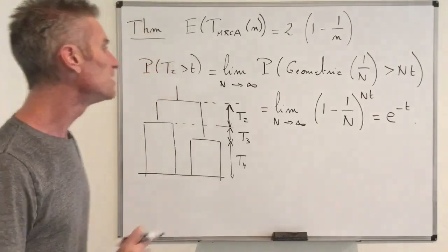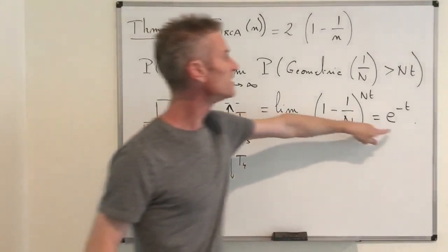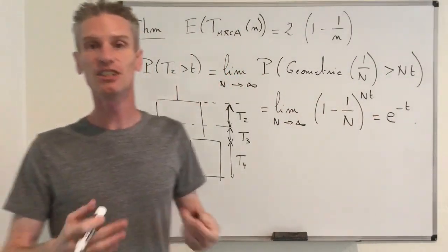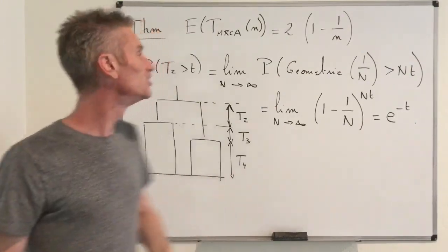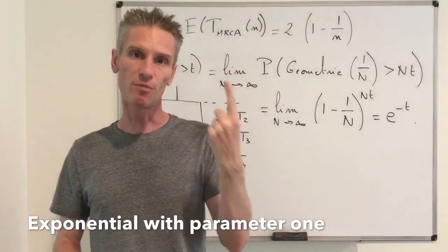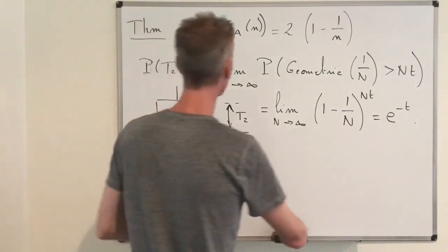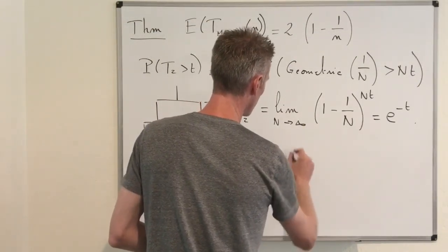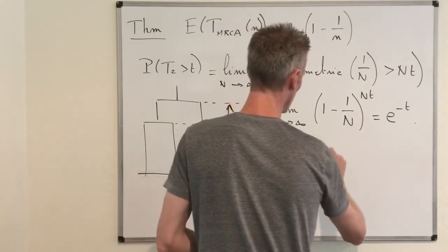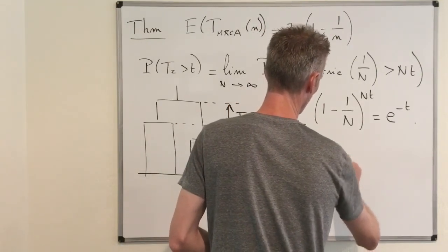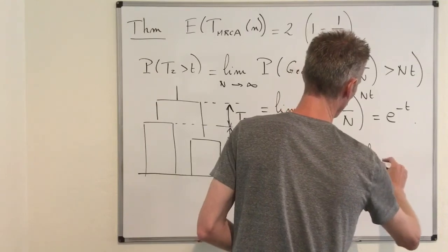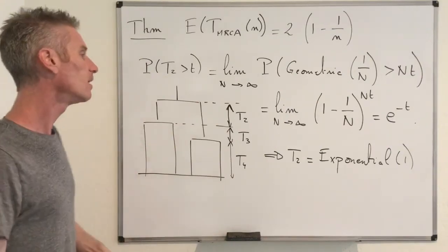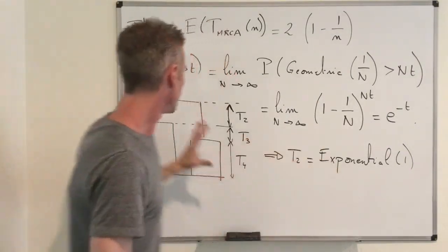This means T_2 is exponentially distributed with parameter 1. Conclusion: T_2 ~Exp(1).